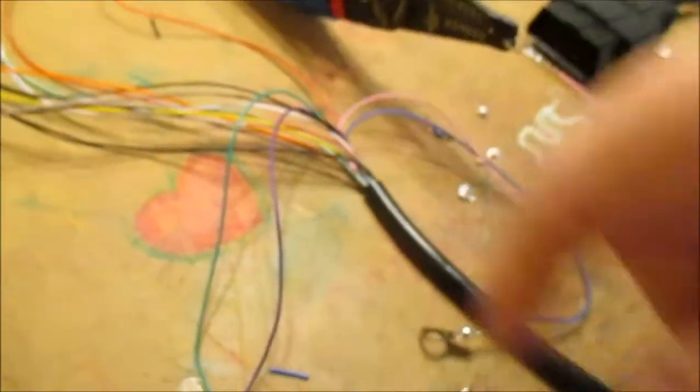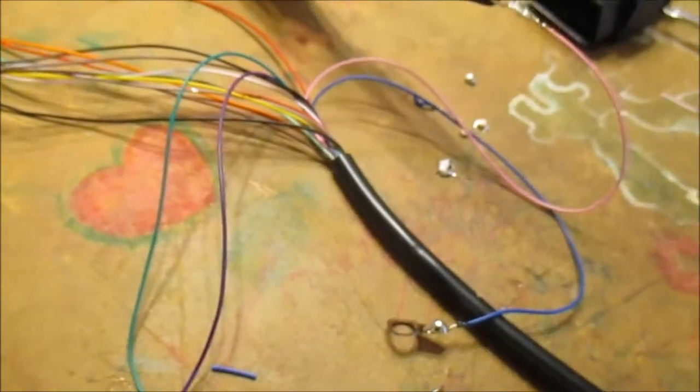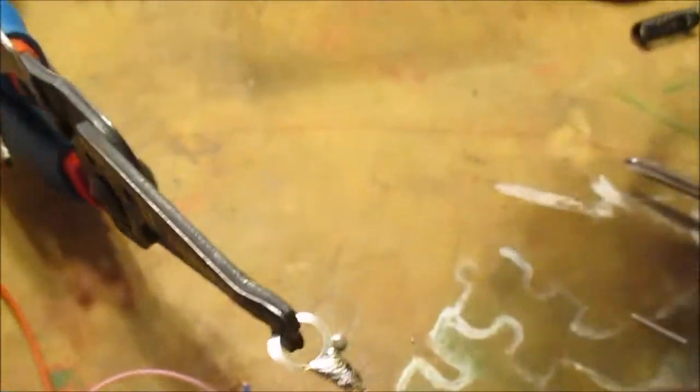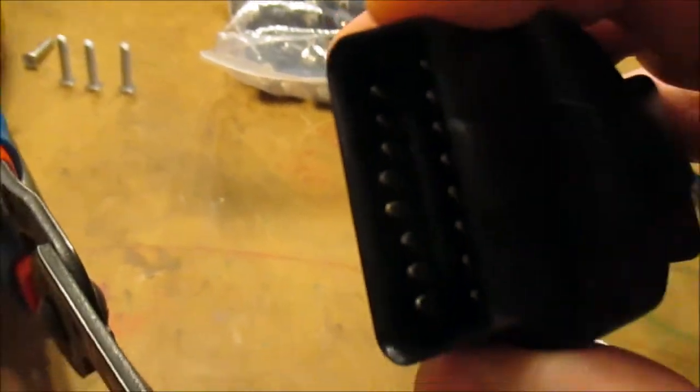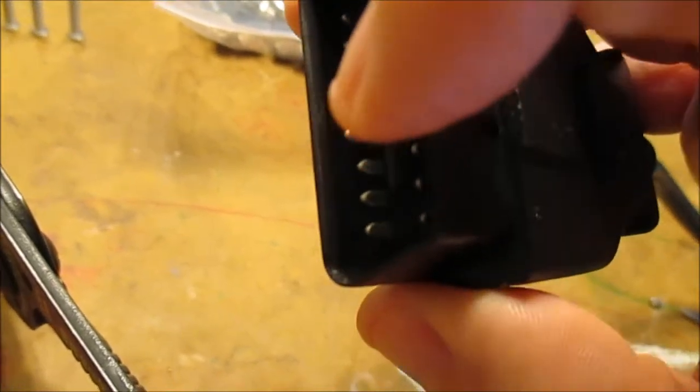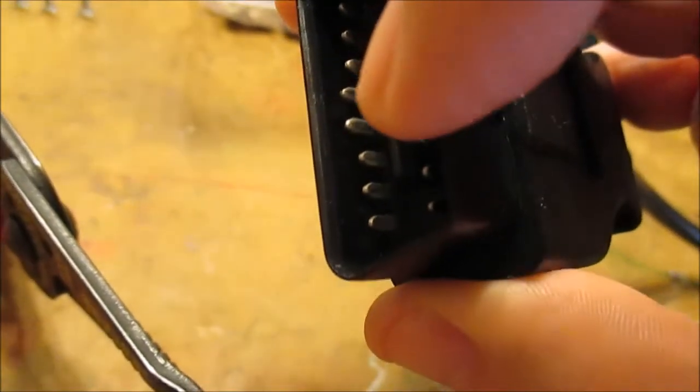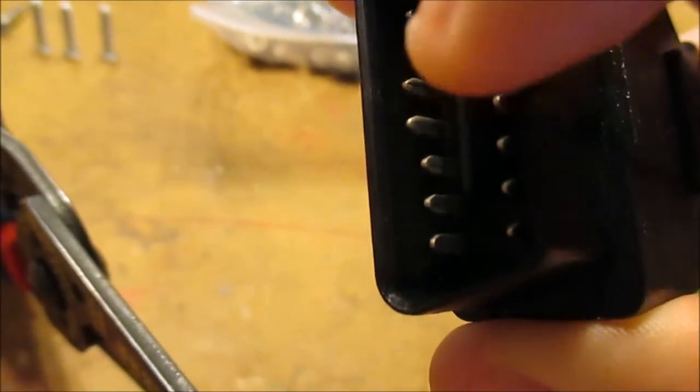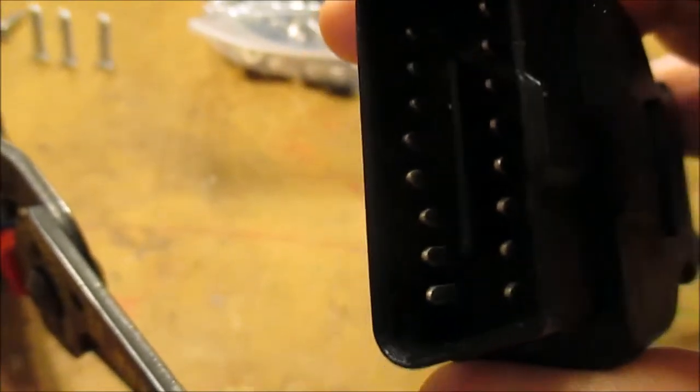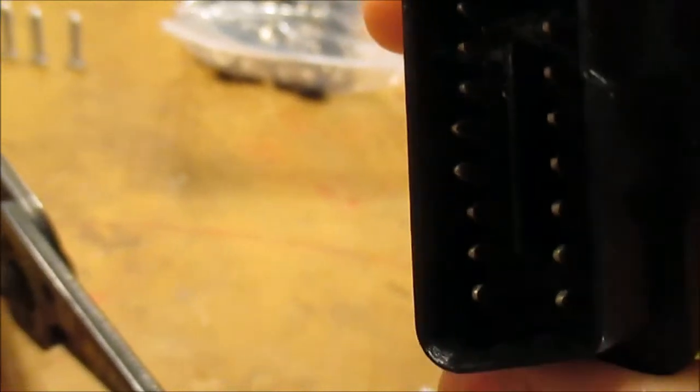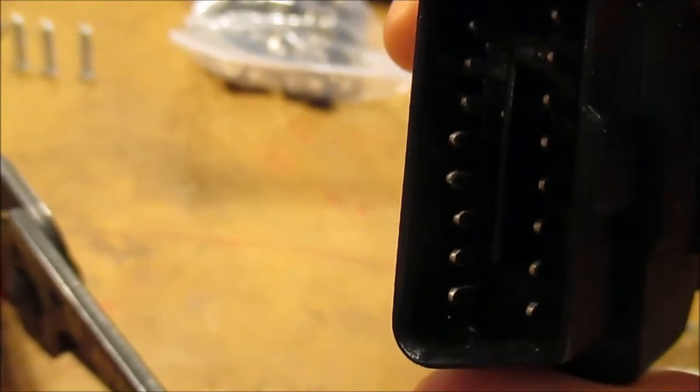So I used my meter and found out that these two - pin number four and five, which are the two grounds - notice here pin four and five are a little bit longer than the rest of the pins. Just take my word for it, pin four and five are the two grounds.